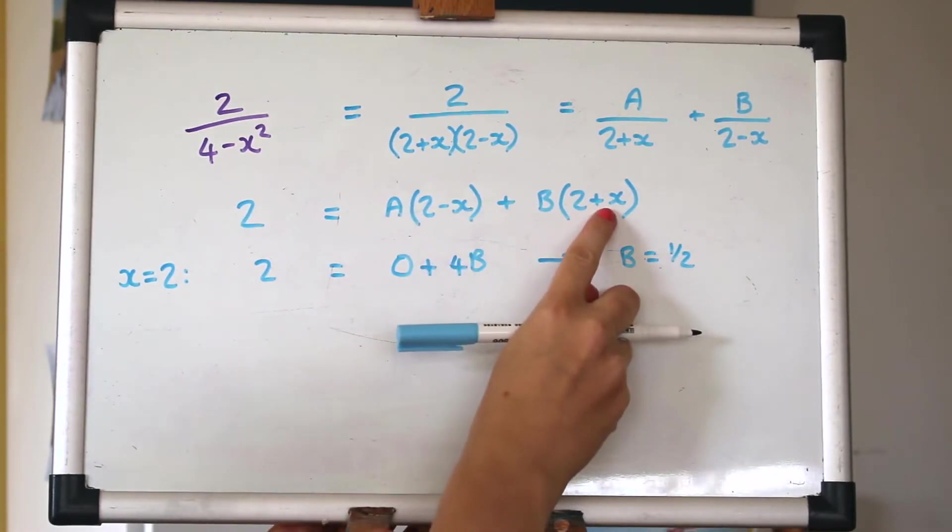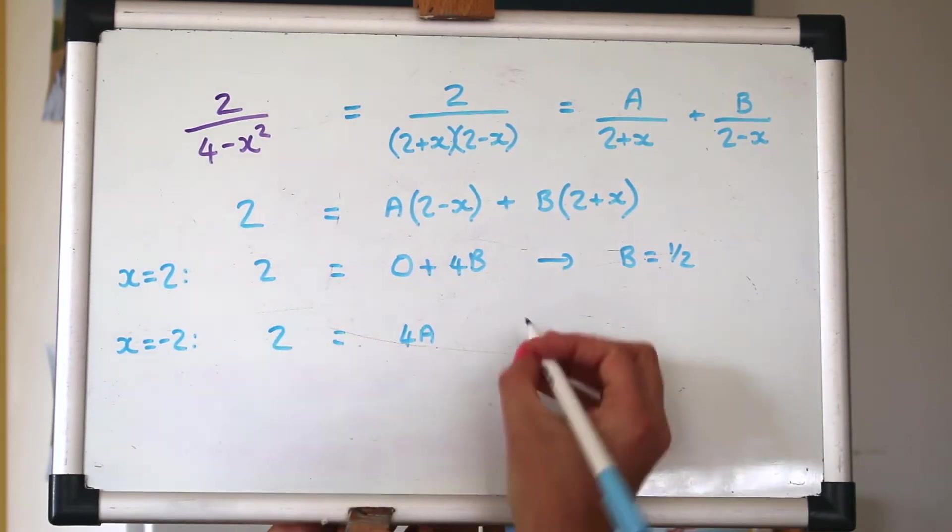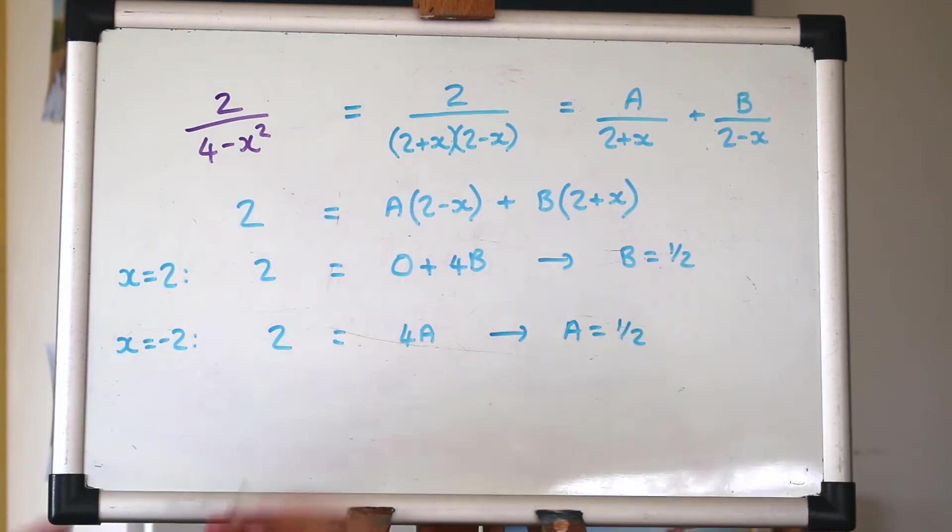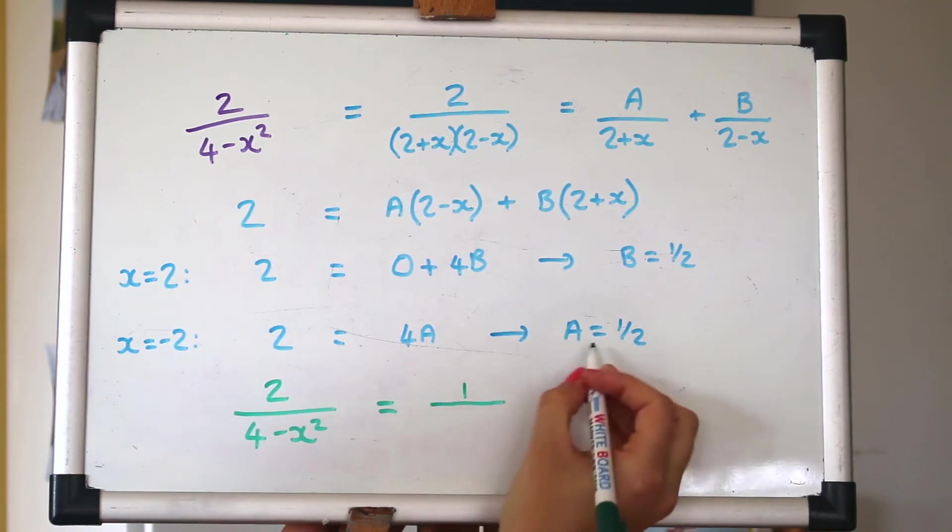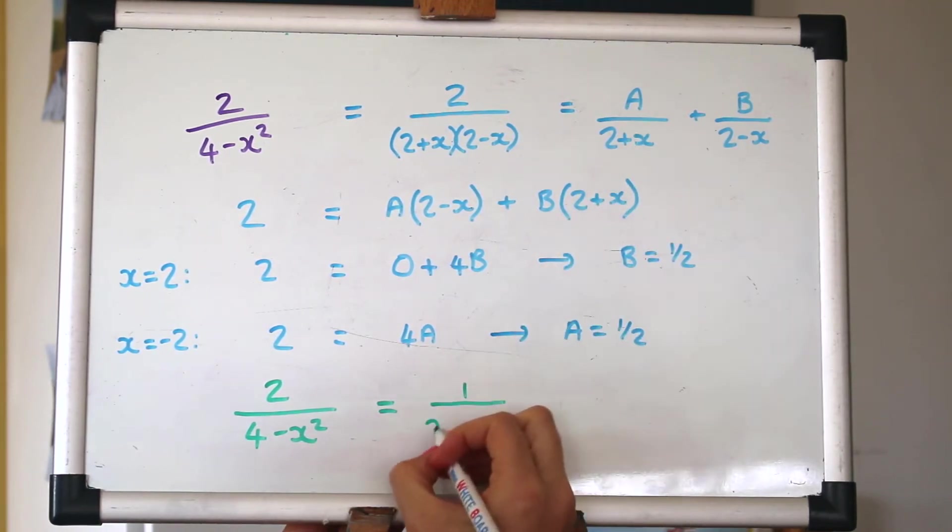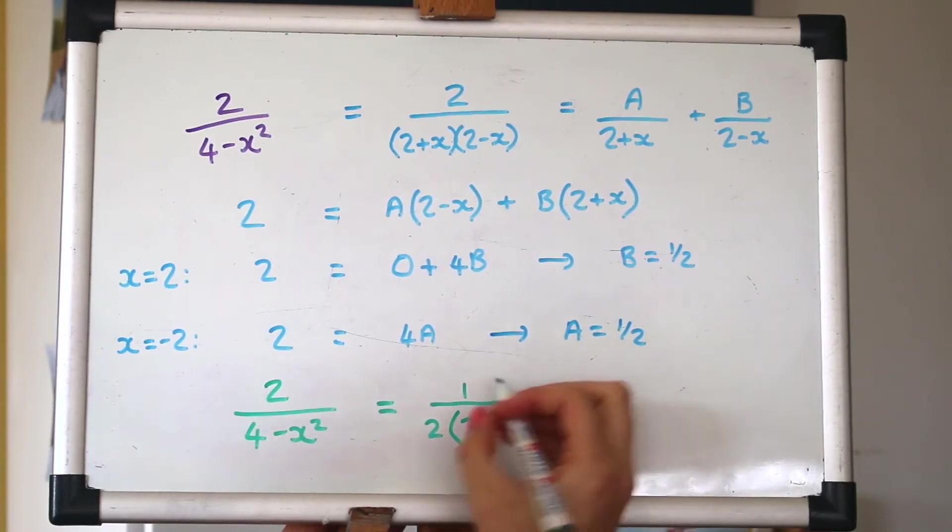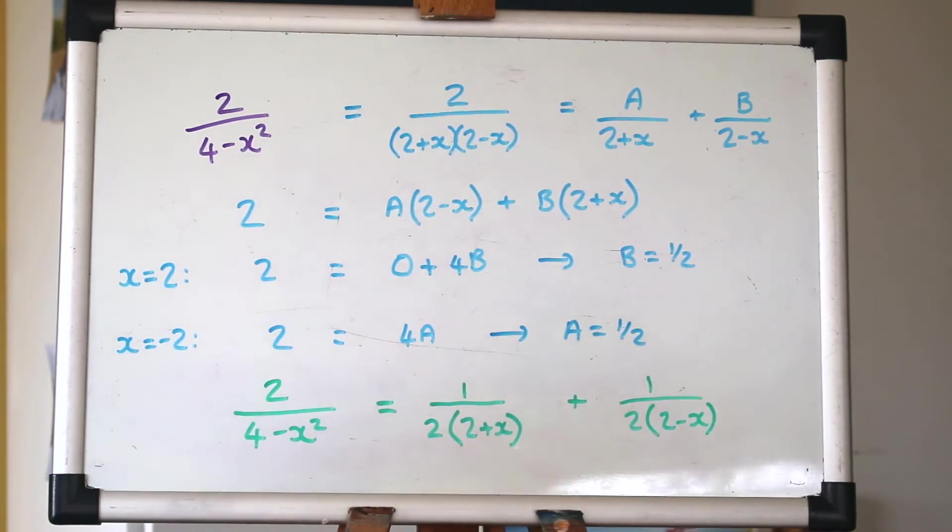And now I'm going to let x be minus 2. And the same thing, that a is a half. So if we want to rewrite that as the partial fractions, then a being a half, we would just put that to one side of that factor there and do the same with b. Put the half like that. Great, let's look at a slightly harder one now.